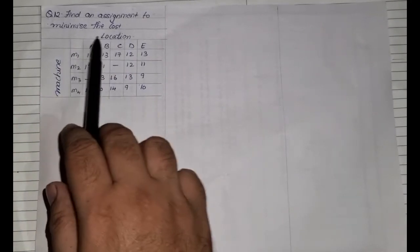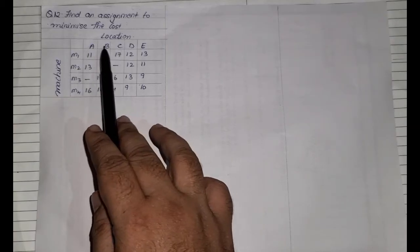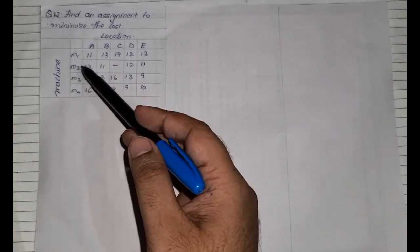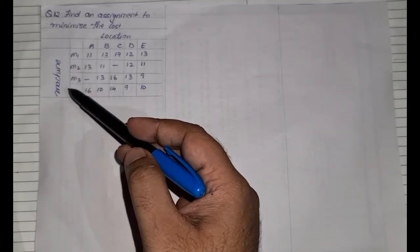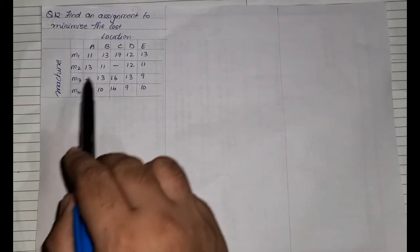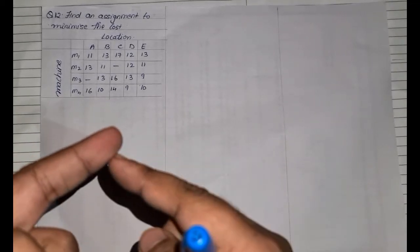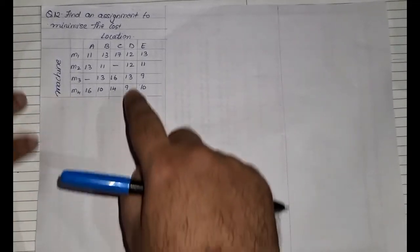The question asks us to find an assignment to minimize the cost — it's a minimization problem. There are five locations A, B, C, D, and E, and four machines: 1, 2, 3, and 4. The problem is not balanced because there are four rows and five columns, and there are also some prohibited values given in the question.